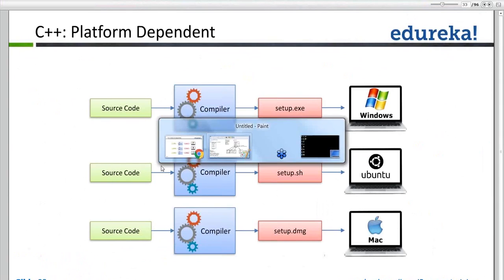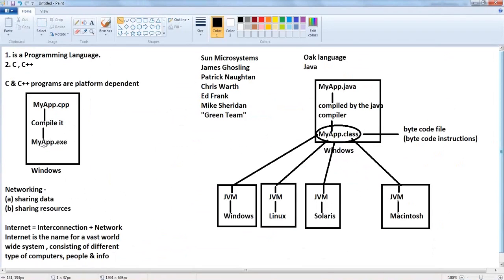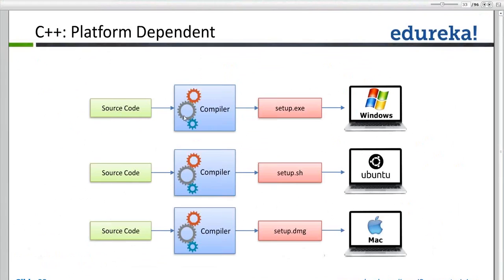How does C++ become platform dependent? You write your C++ program and compile it — it creates an .exe file understandable for Windows. In Linux/Ubuntu, compiling creates a .sh file. In Mac, compiling creates a .dmg file. Each operating system has its own file format. This .exe file cannot be executed in Ubuntu or Mac, and a .sh file is not understandable for Windows or Mac. Therefore C++ is platform dependent.